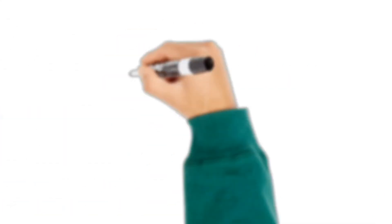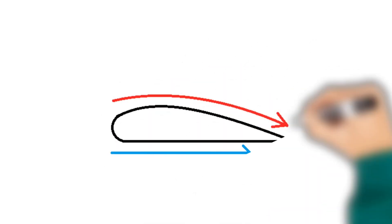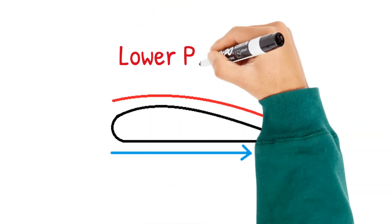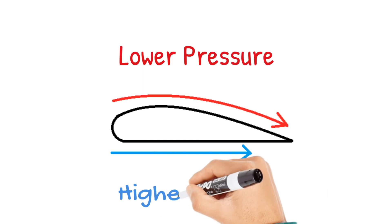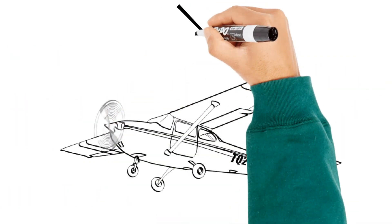So what happens if there's lower pressure on the upper surface of the wing and higher pressure on the bottom surface of the wing? You get an upward force and that upward force is known as lift.